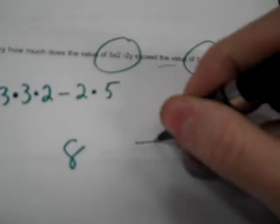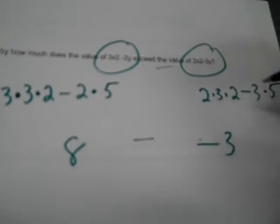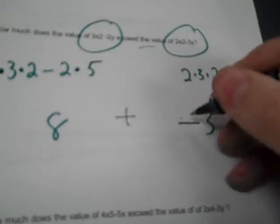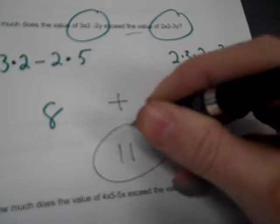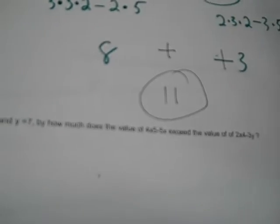Now I figure these out on a calculator. 3 times 3 times 2 minus 2 times 5, that's 8. And then 2 times 3 times 2 minus 3 times 5, that's negative 3. If you're finding out how much does one exceed the other, you're subtracting. If I'm subtracting a negative number, I need to really add the positive, and that gives me 11. It exceeds it by 11 units.